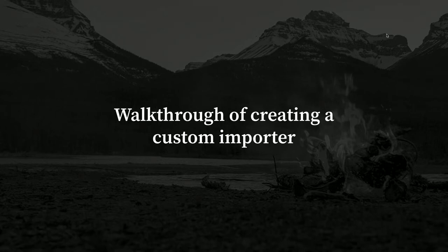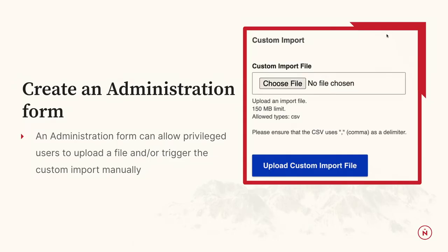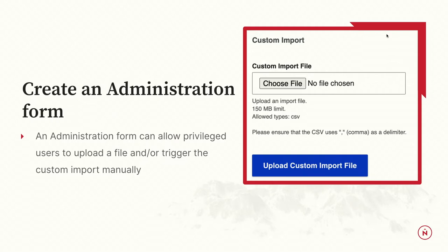So this is a walkthrough of how I make importers — take it with a grain of salt, but hopefully you're on the same vibe. I typically start with an administration form. I like this because it allows someone to upload a file — in all my examples I'll be talking about CSVs. Someone can upload that CSV and trigger the import. It's nice because even when we automate it, if someone needs a quick fix and doesn't want to wait until midnight, they can go in and run it manually.